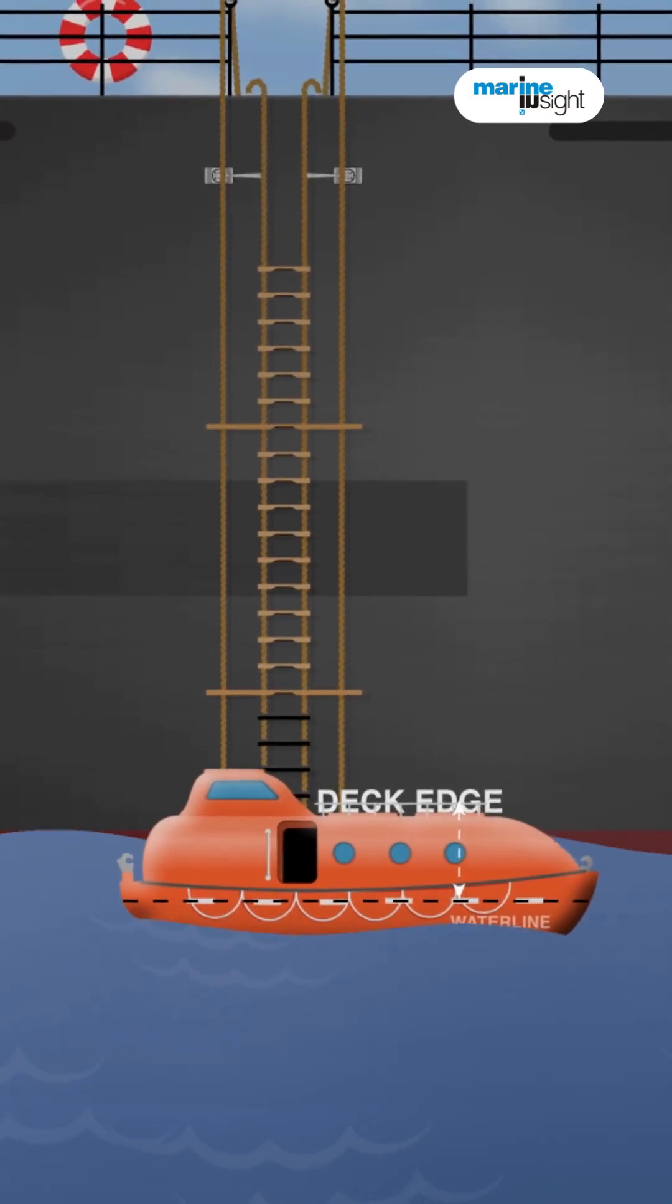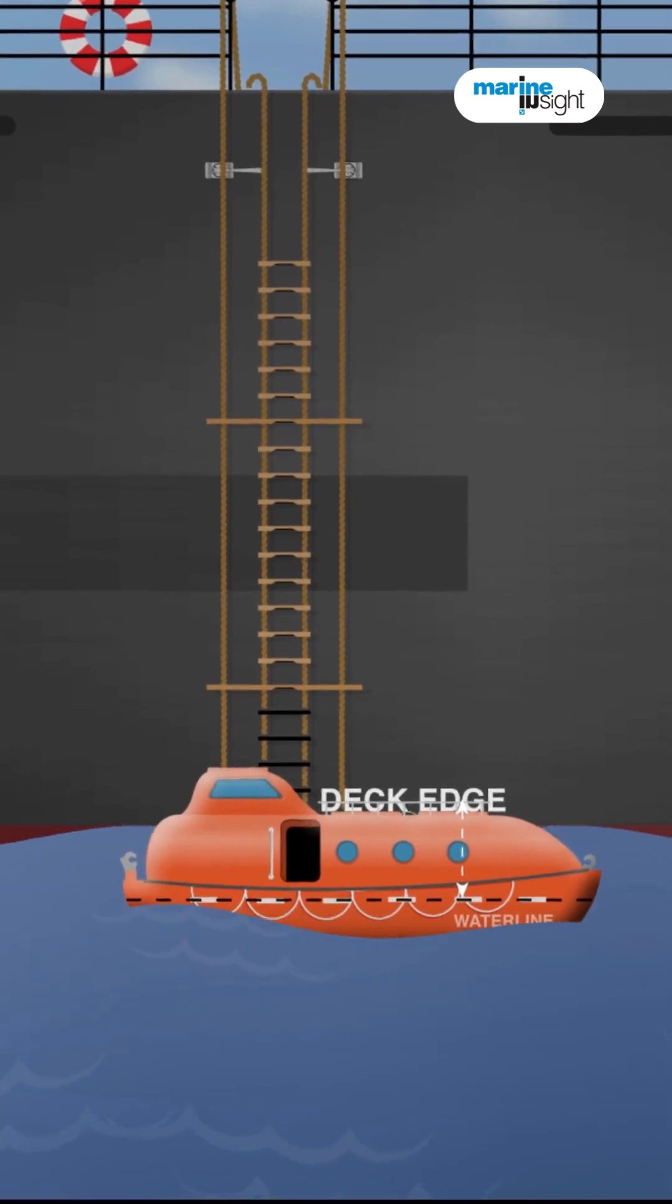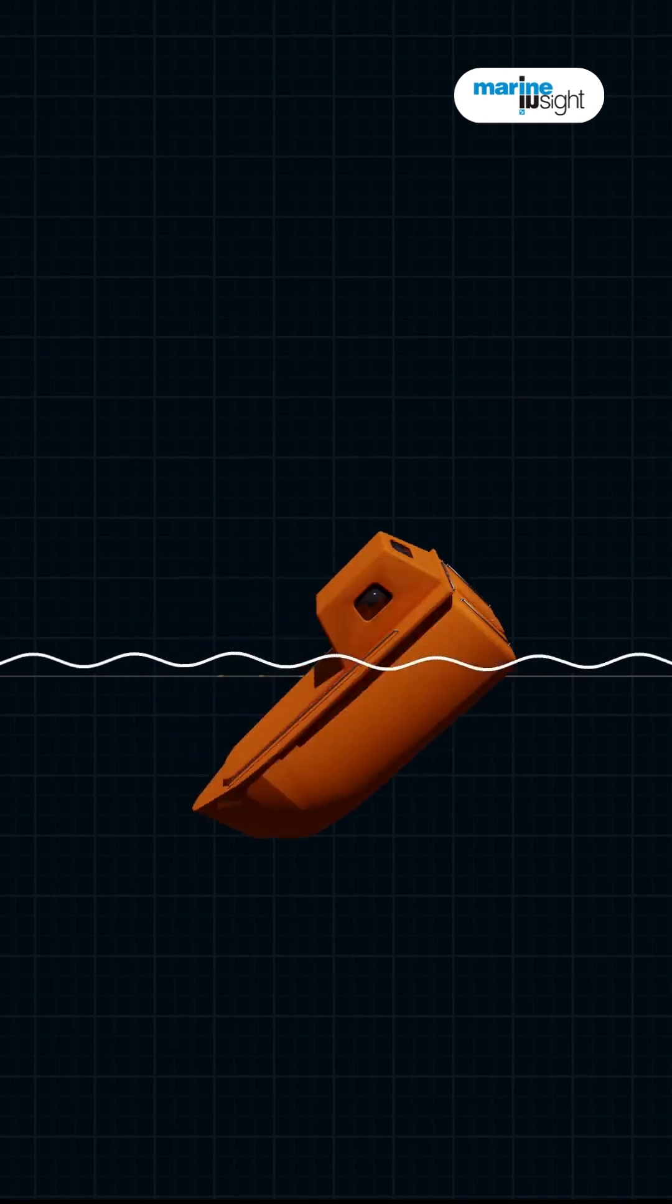Enclosed lifeboats are designed with ample freeboard to prevent waves from swamping them. Some are even equipped with self-righting mechanisms, ensuring they flip back upright if capsized.